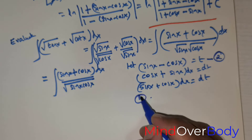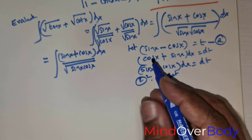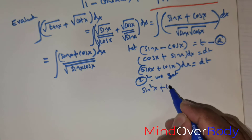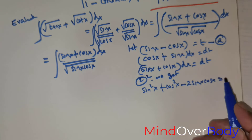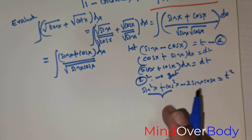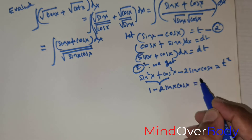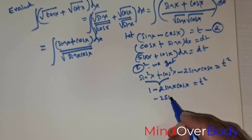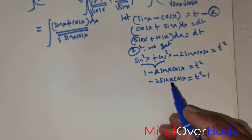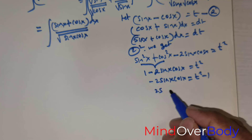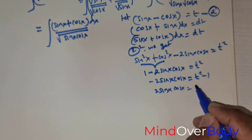Squaring both sides of t = sin x − cos x, we get t² = sin²x + cos²x − 2 sin x cos x. Since sin²x + cos²x = 1, this gives 1 − 2 sin x cos x = t², so −2 sin x cos x = t² − 1, which means 2 sin x cos x = 1 − t².